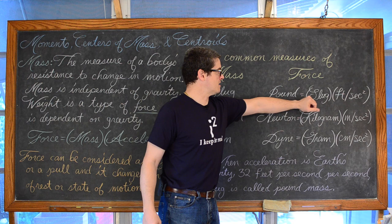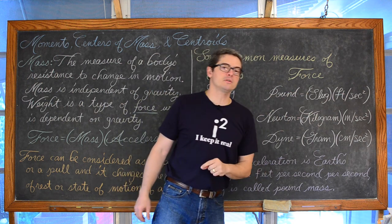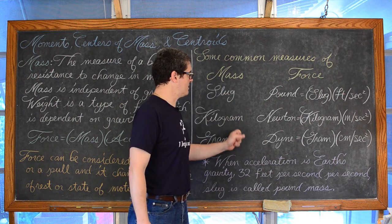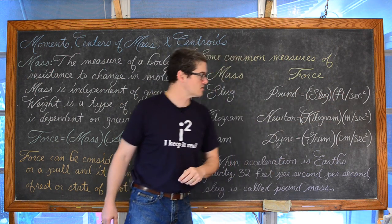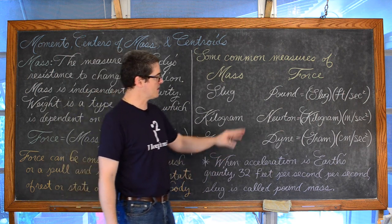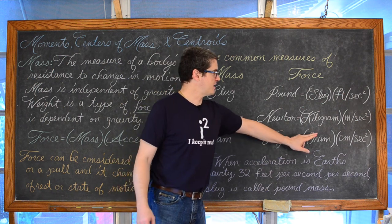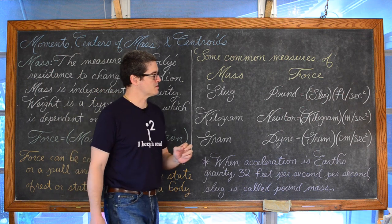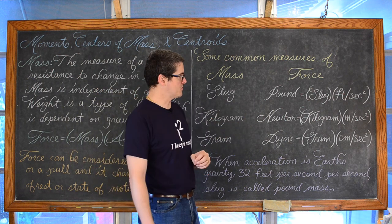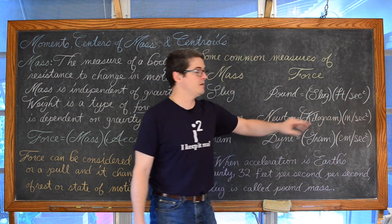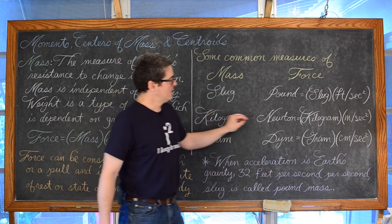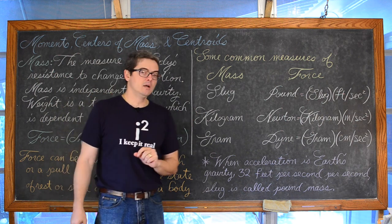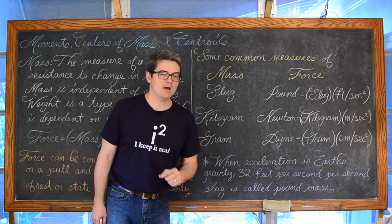If your mass is measured in slugs, then force in pounds is equal to slugs times feet per second squared. If your mass is measured in kilograms, then a newton is equal to kilograms times meters per second squared. And if your measure of mass is grams, then force — the dyne — is the product of grams times centimeters per second squared. A newton is the amount of force required to produce an acceleration of one meter per second per second on a mass of one kilogram. When acceleration is Earth's gravity — 32 feet per second per second — a slug is called pound-mass.